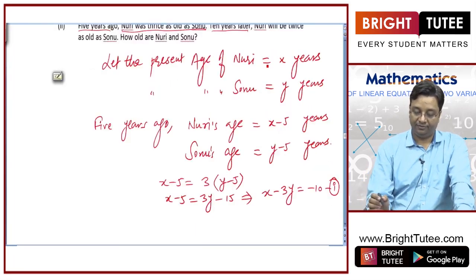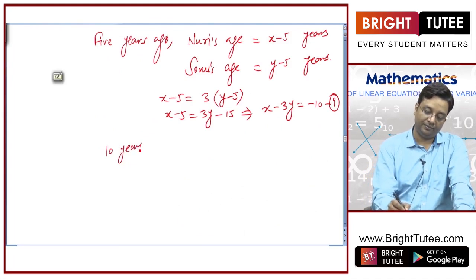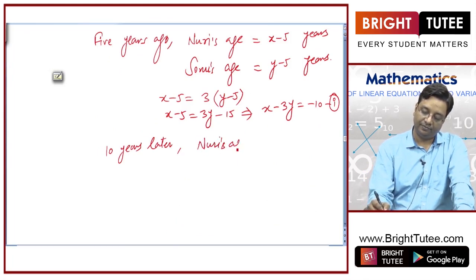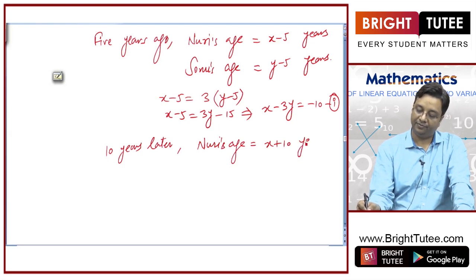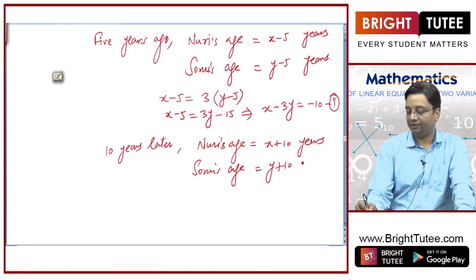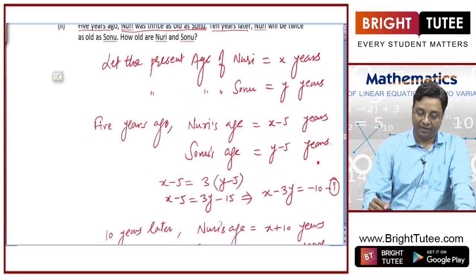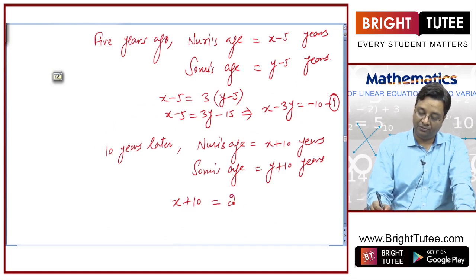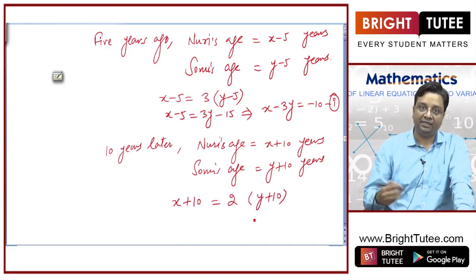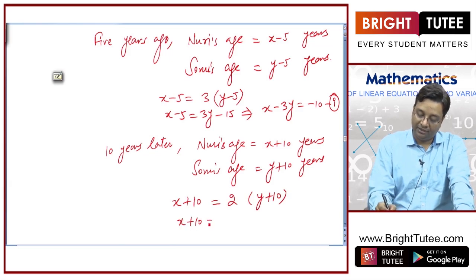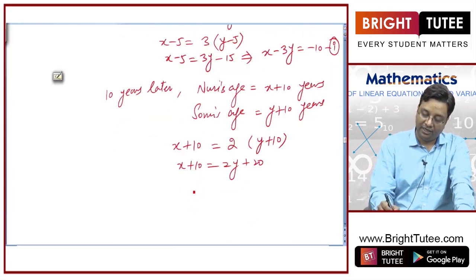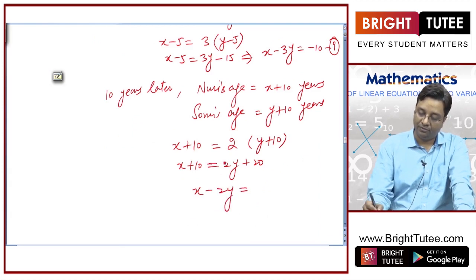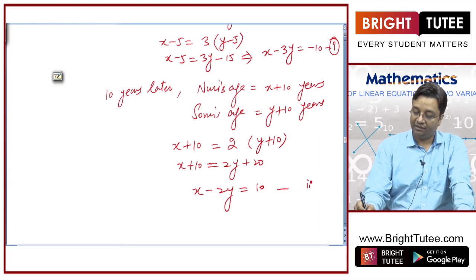Second condition is 10 years later. So, 10 years later Nuri's age will be x plus 10 years and Sonu's age will be y plus 10 years. The condition is that Nuri will be twice as old as Sonu. So, x plus 10 equals twice of y plus 10, giving x plus 10 equals 2y plus 20, hence x minus 2y equals 10. This is my second equation.